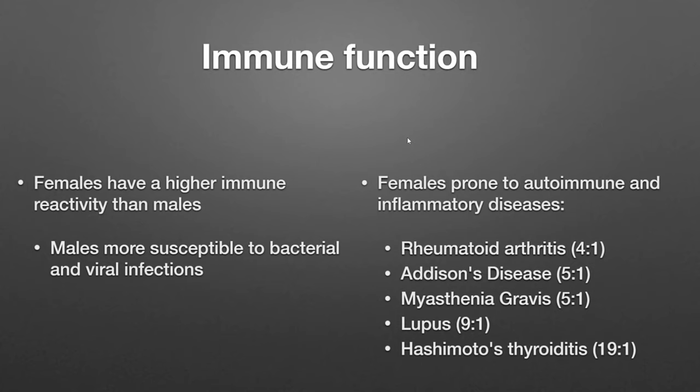What this means is females are going to be prone to a lot of autoimmune and inflammatory diseases — RA, Addison's, lupus, Hashimoto's. I don't think I've ever seen a male patient with RA or Hashimoto's. Lupus is pretty prevalent but I do see a lot more females with it. Have you guys ever seen a male with RA? It exists but you know a lot more females who have it.